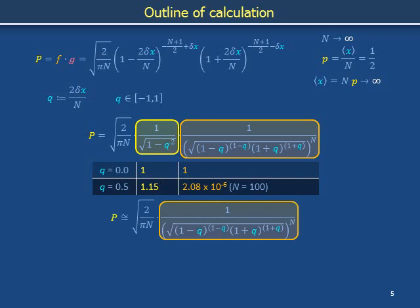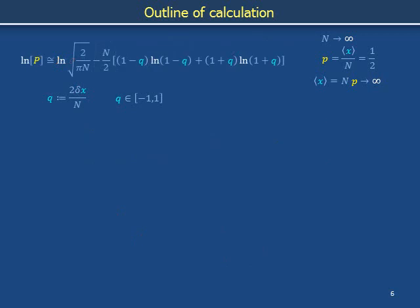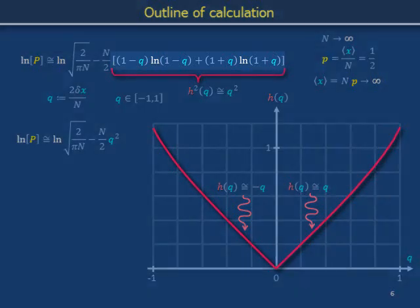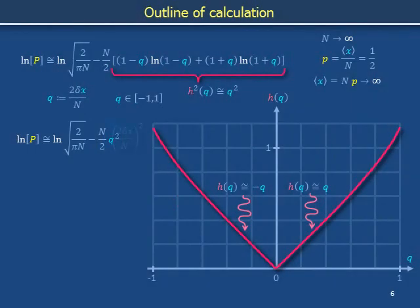To prepare for graphical analysis, we take the natural logarithm of both sides of this equation. Identifying the pink part as h squared of q, and using a computer to plot its positive square root h of q, the resulting curve is very simple. Particularly in the region near q equals 0, we obtain approximately straight lines: h equals minus q for q less than 0, and h equals positive q for q greater than 0. Because h is roughly equal to plus or minus q, h squared is roughly equal to q squared. The natural log of capital P can thus be simplified by replacing the factor of (1 minus q) ln(1 minus q) plus (1 plus q) ln(1 plus q) with simply q squared.